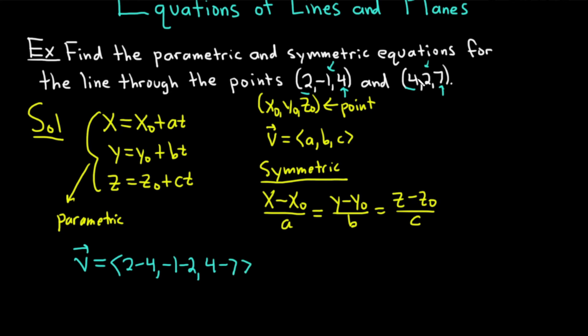Again, so we did 2 minus 4, -1 minus 2, and then 4 minus 7. That's going to give us the vector (-2, -3, -3).